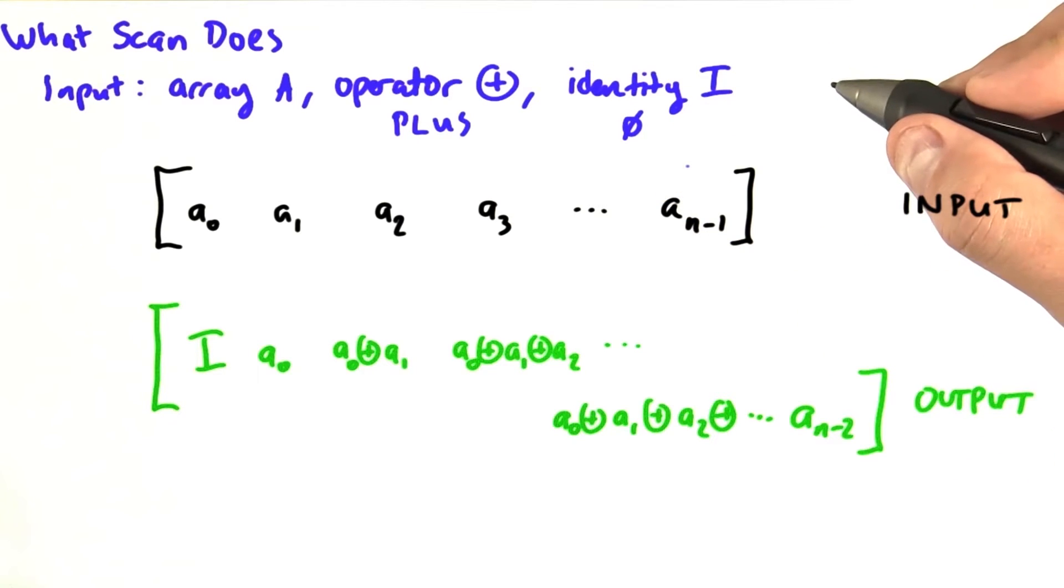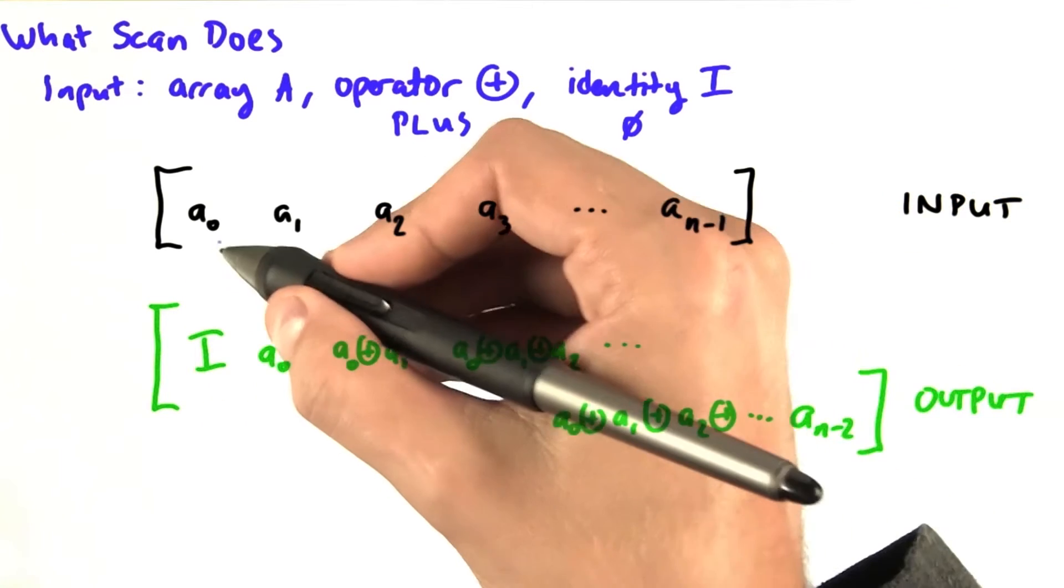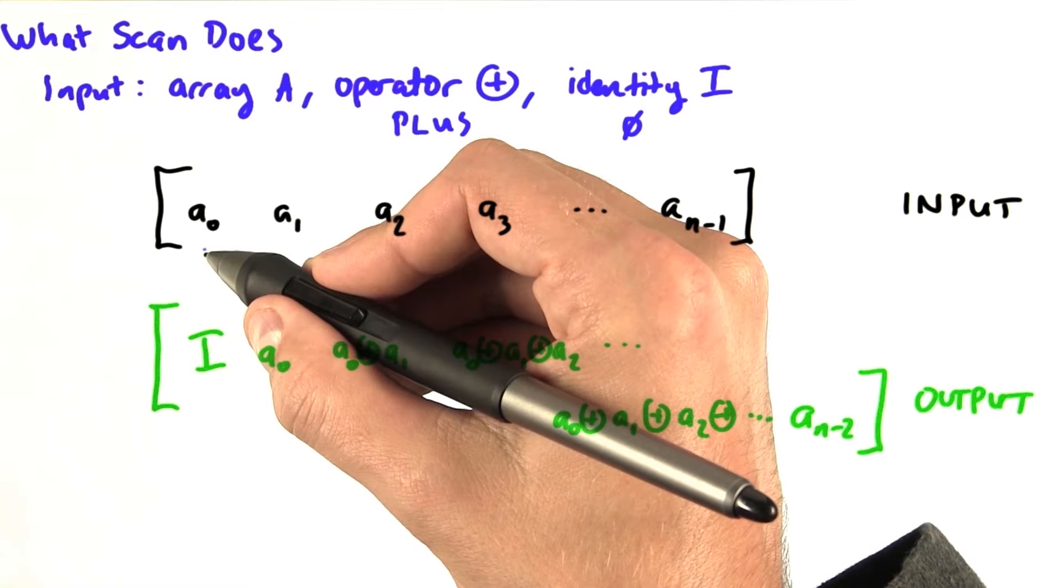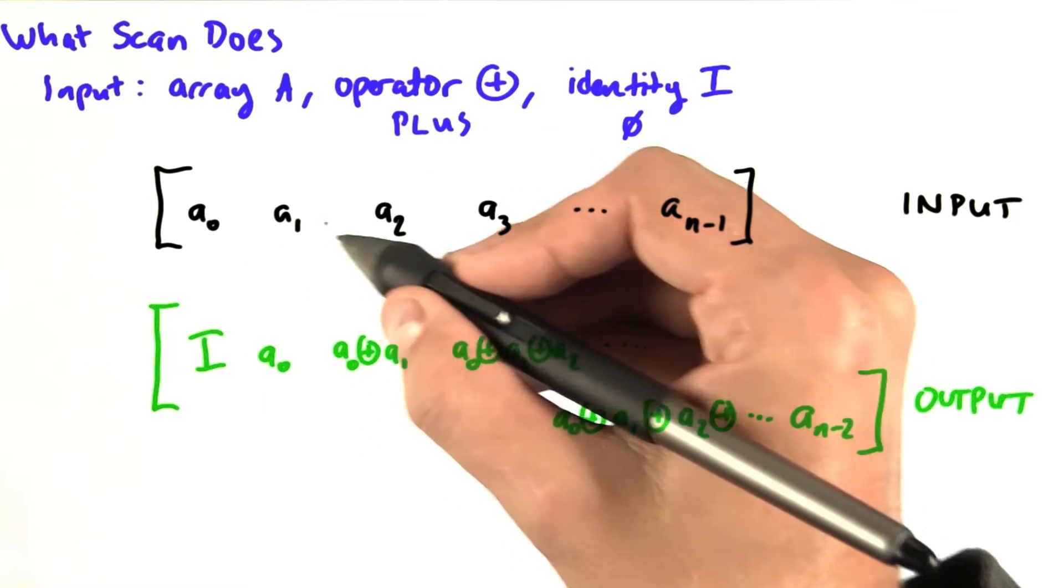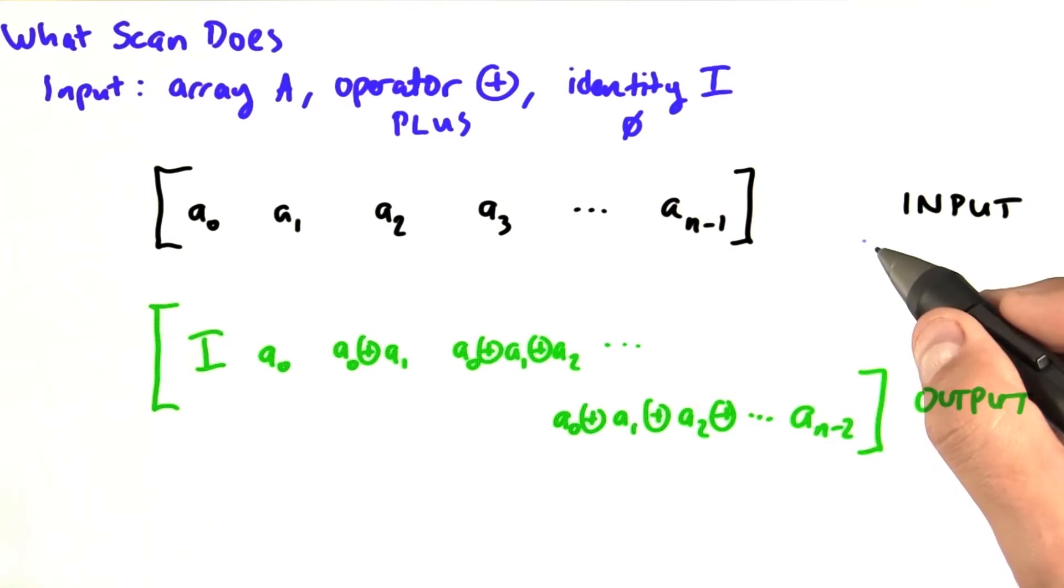Let's keep in mind that this discussion will apply to any binary associative operator. So our input is an array of length n. We start off by designating the first element of the input as a0, the second element is a1, the third is a2, and so on.